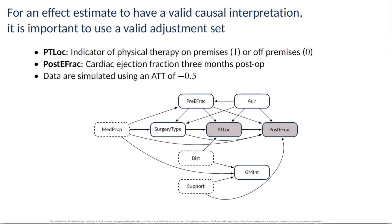An important point to keep in mind is that to get a valid effect estimate, you need to balance the right variables that make a valid adjustment set. If you observe all the pretreatment variables relevant to the data generating process, then balancing all those variables will lead to a valid effect estimate. However, for observational data, there are likely to be variables that influence the data generating process that are not observed in the data you have to analyze. These unobserved variables can complicate the considerations of what makes a valid adjustment set.